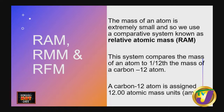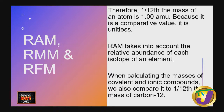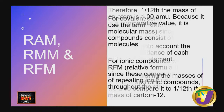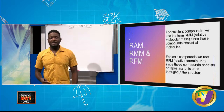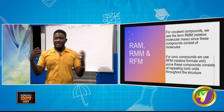When calculating the RMM or RFM, we add all of the RAMs. For covalent compounds — which have covalent bonds, meaning electrons are shared rather than exchanged — we use the term RMM, relative molecular mass, because covalent compounds consist of molecules. For ionic compounds, we use RFM, relative formula unit, because those consist of ionic structures.